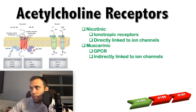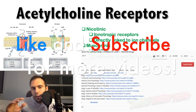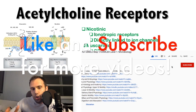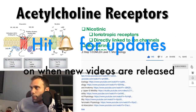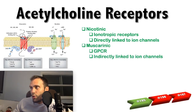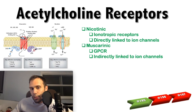There are two major types of acetylcholine receptors: nicotinic and muscarinic receptors. The nicotinic receptor is ionotropic — it is directly linked to ion channels, and it's directly linked to the distribution of calcium and sodium ions across the cell membrane. The muscarinic receptor is a GPCR, a G protein-coupled receptor, where a secondary messenger system indirectly links ion channels to the receptor.